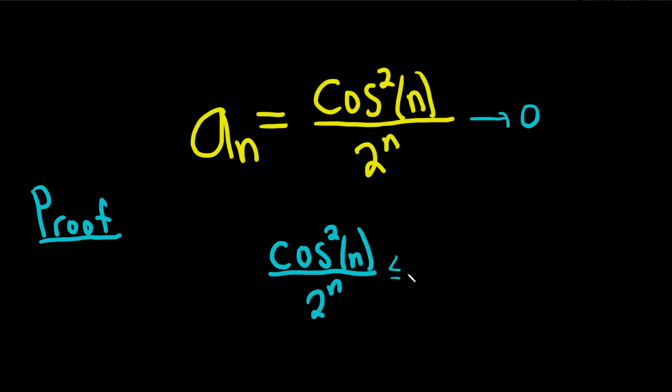And this is less than or equal to 1 over 2 to the n. That's because cosine of n is less than or equal to 1 and greater than or equal to negative 1. So if this is still less than or equal to 1 if you square it, no big deal.